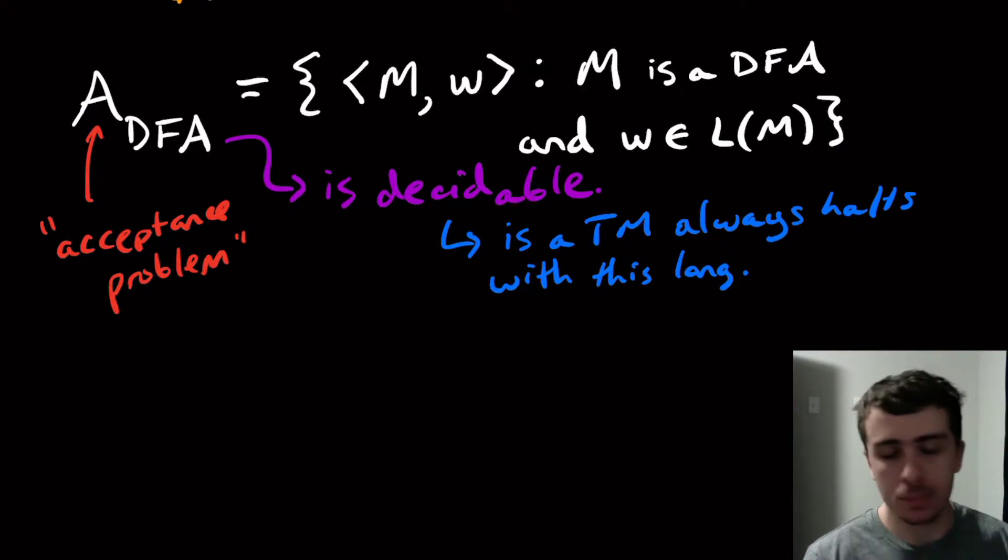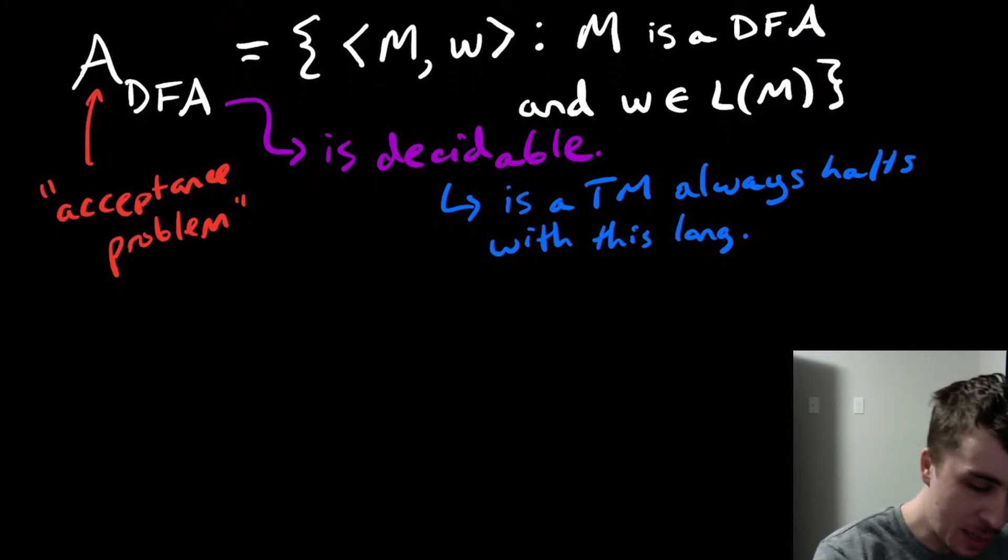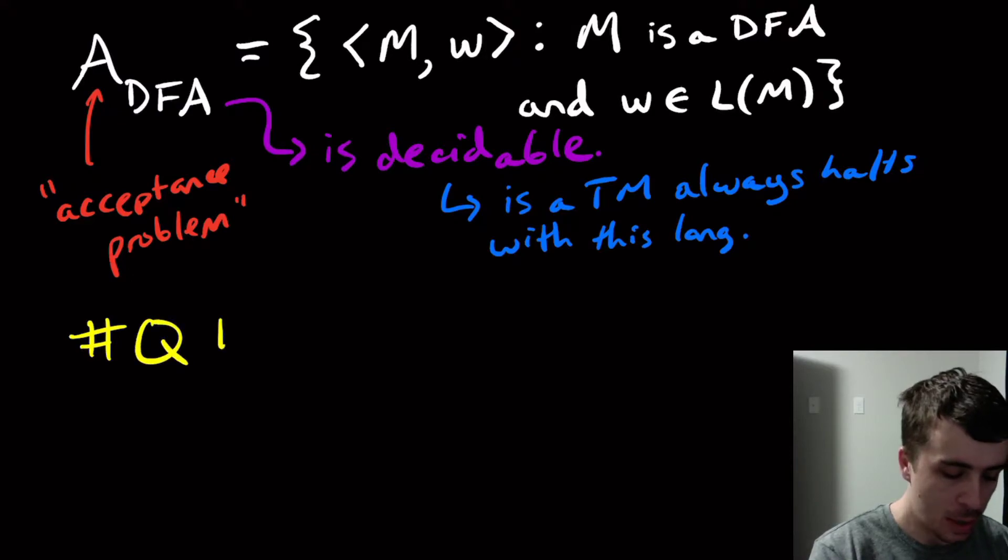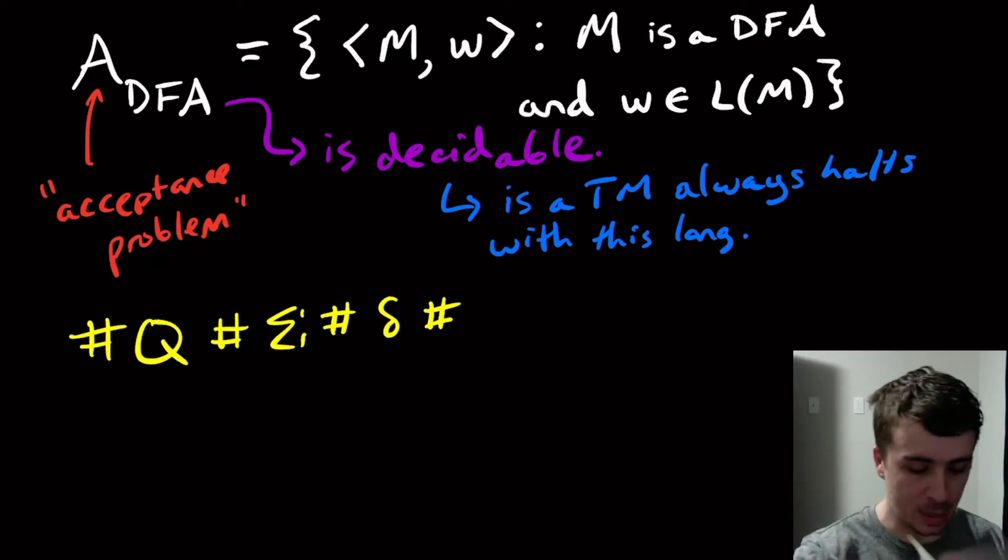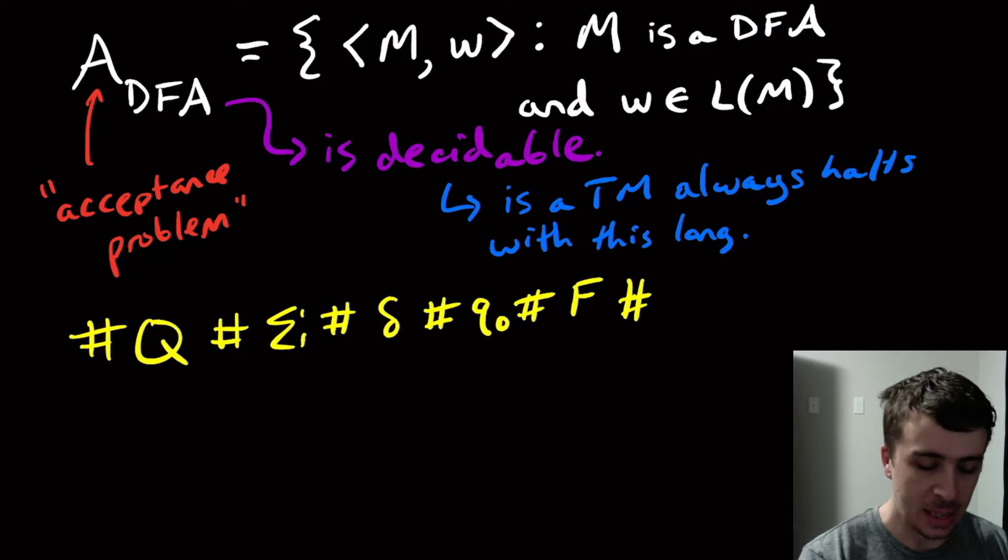So how would we actually show this? Well, the simple answer is I can just simulate the DFA for each of the characters in w, and then we're done. So if we think about it, what do we actually need to do? So let's just say we have this encoding, although it could be a totally different encoding. So let's say that I put the pound sign such that I have states, then input characters, then the transition function, then start state, then final states.